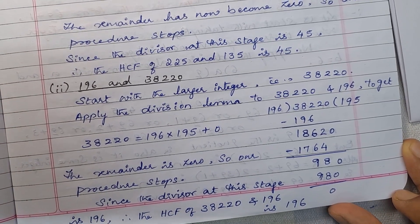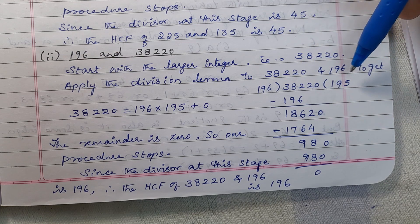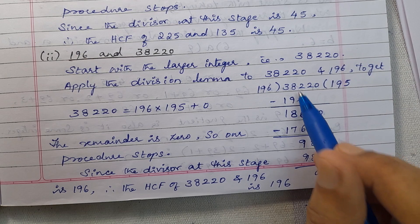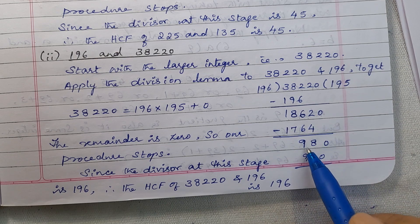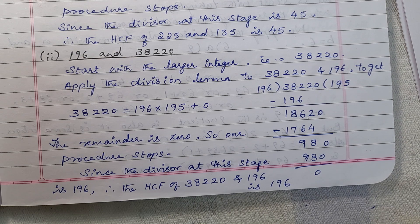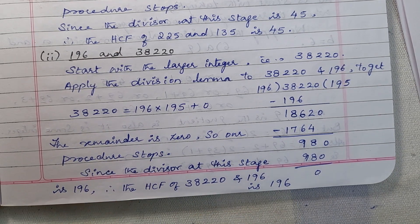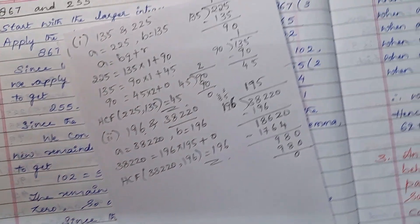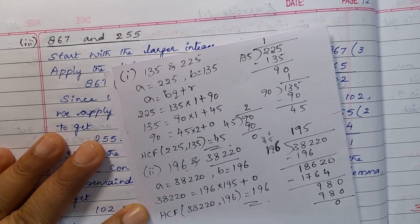See the solution. Start with the larger integer, that is 38,220. Apply the division lemma to 38,220 and 196. So 196 ones are 196, subtract to get 18,620; 196 nines are 1764, subtract to get 980; 196 fives are 980, so remainder is 0. The remainder is 0 so our procedure stops. Since the divisor at this stage is 196, therefore the HCF of 38,220 and 196 is 196.